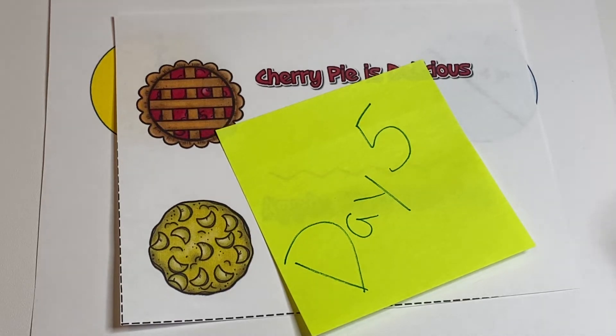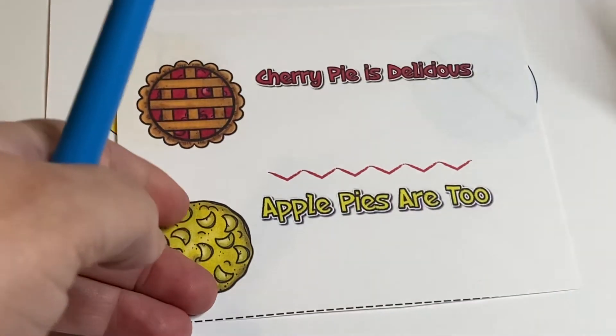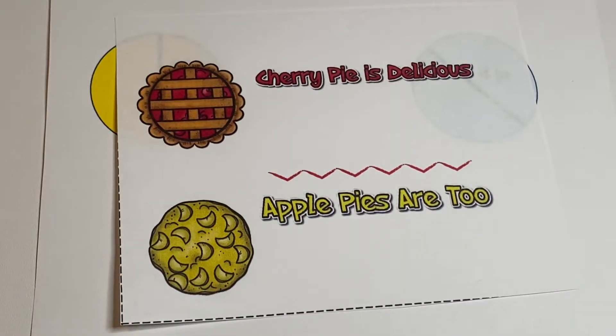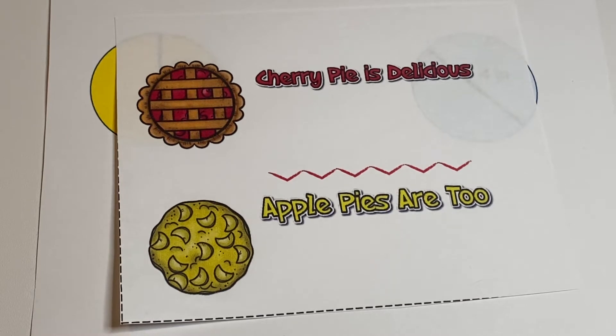Hi and welcome to day 5, our last day working on circles. I want to refresh your memory on our mnemonic device: cherry pies delicious, apple pies are too, to help us remember the formulas for circumference and area. Let's see if you can remember. Take a minute and write them down.